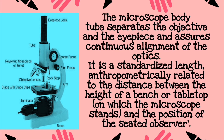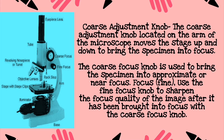Number two, the microscope body tube separates the objective and the eyepiece and assures continuous alignment of the optics. It is a standardized length, anthropometrically related to the distance between the height of a bench or tabletop on which the microscope stands and the position of the seated observer.